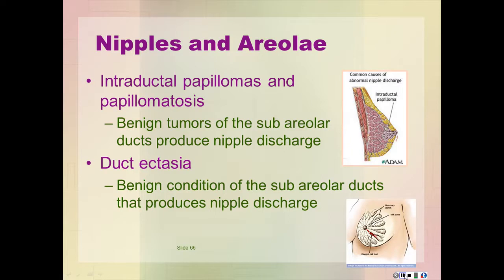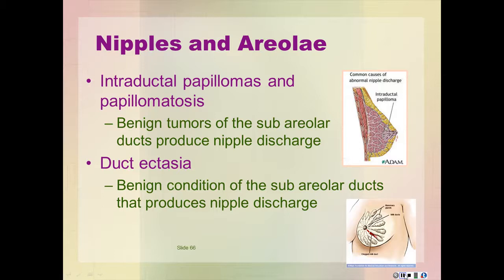Intraductal papillomas and papillomatosis are benign tumors of the subareolar ducts that produce nipple discharge. Epithelial hyperplasia produces a wart-like tumor in a lactiferous duct, which may occur singly or in multiples. There may be spontaneous nipple discharge. Duct ectasia is a benign condition of the subareolar ducts that produces nipple discharge. Subareolar ducts become dilated and blocked with desquamating secretory epithelium, necrotic debris, and chronic inflammatory cells. This occurs most commonly in menopausal women. Spontaneous unilateral or bilateral nipple discharge, often green or brown in color, may be produced.